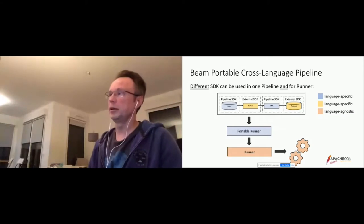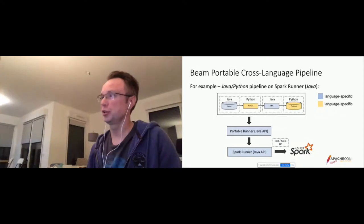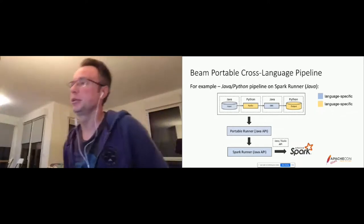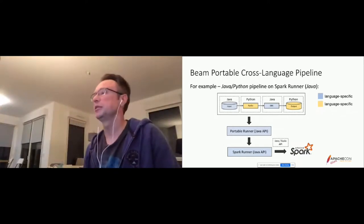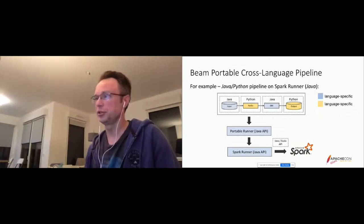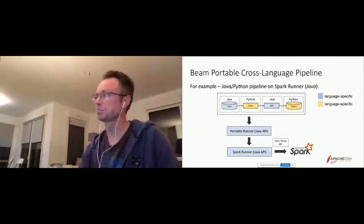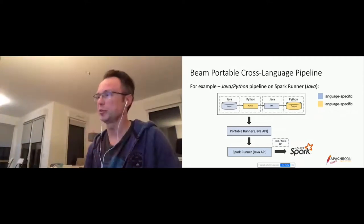For example, in a Java-Python pipeline on Spark runner — where Spark runner in Beam is written in Java — we run our pipeline in Java but add some transforms in Python, then run it on a portable runner with a Java API. This creates a portable representation of our pipeline to run on a portable Spark runner.